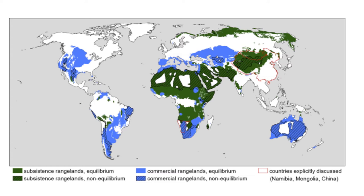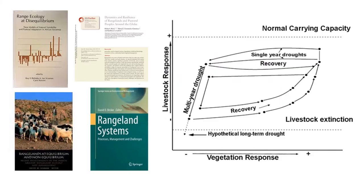This debate has been running now for nearly 30 years. There's been a huge amount of literature on non-equilibrium ecology since the early 1990s — thesis after thesis and paper after paper debating whether a given place is equilibrium or non-equilibrium and what this means for rangeland management. Quite a lot of that debate, in my view, actually didn't go very far and slightly missed the point.